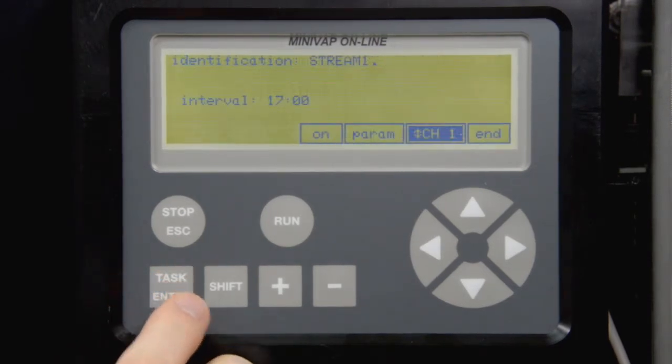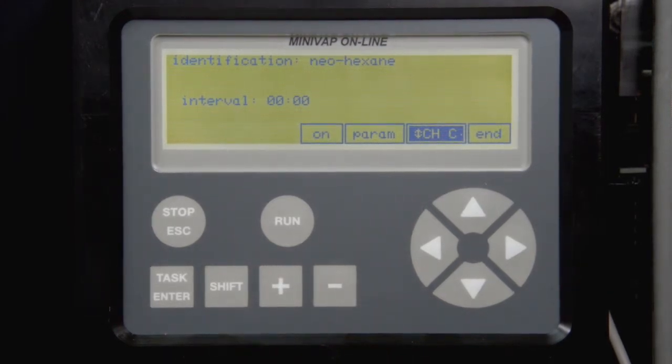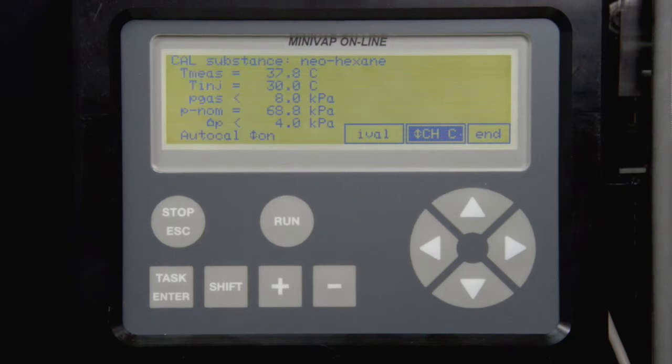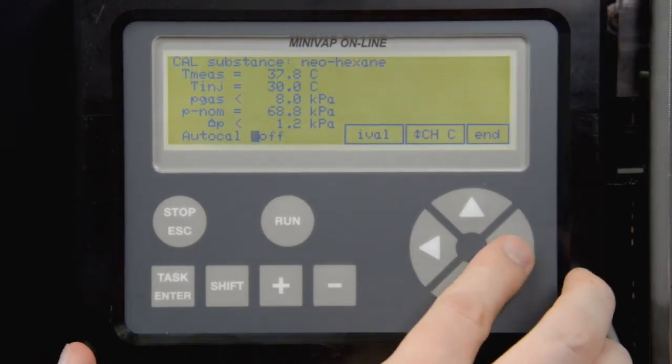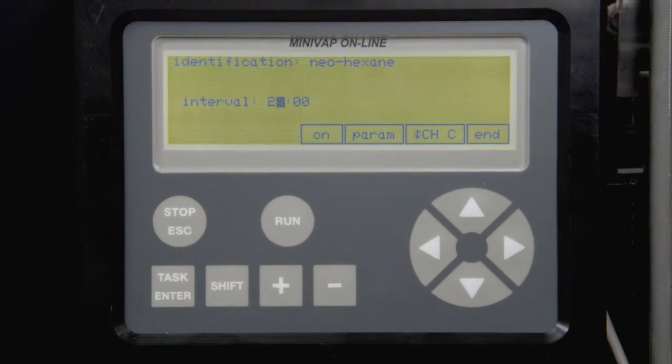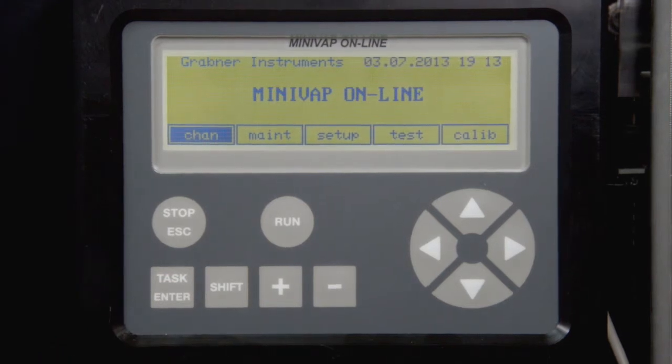After you've programmed the measuring channels, move to channel C, used for calibration and validation. Enter the name of the calibration standard and the nominal pressure of the calibration liquid. Delta P is the maximum deviation allowed. If this deviation is exceeded, an error is triggered and the unit needs to be recalibrated. Auto-Cal should be on for automatic calibration correction. If the channel is used for validation, turn Auto-Cal off. Adapt the calibration or validation interval. Click on End to get back to the main channel menu. Now your unit is configured.